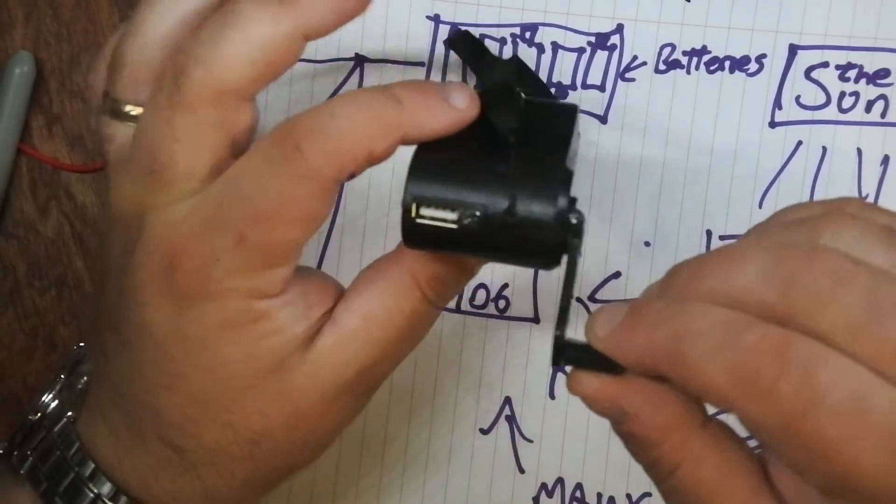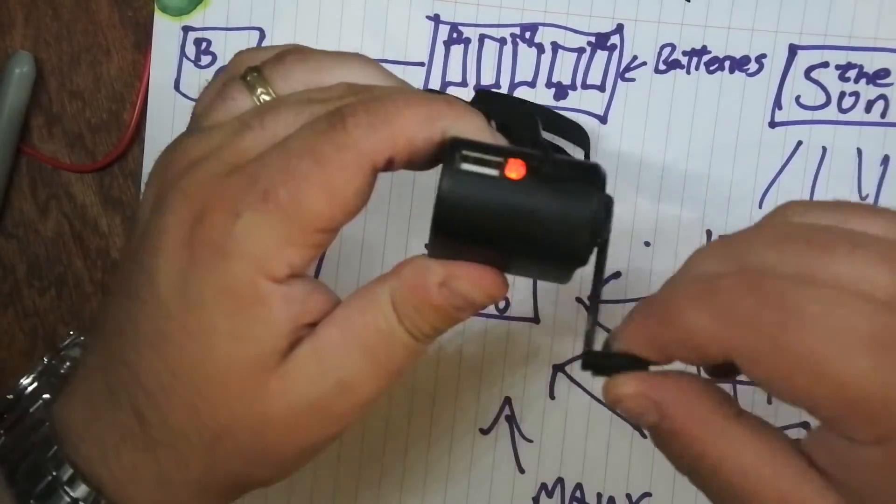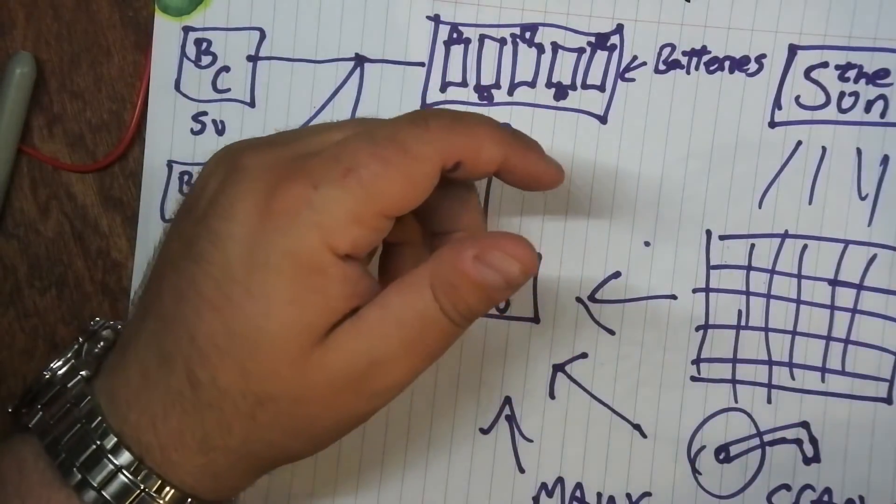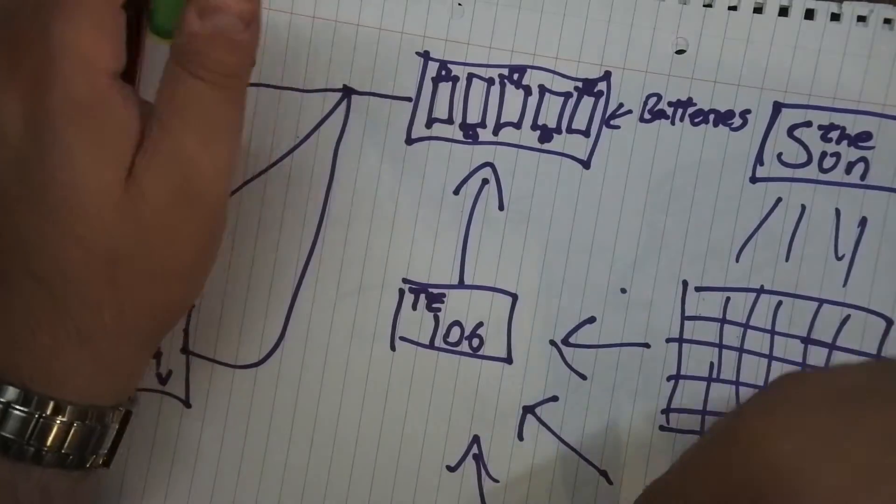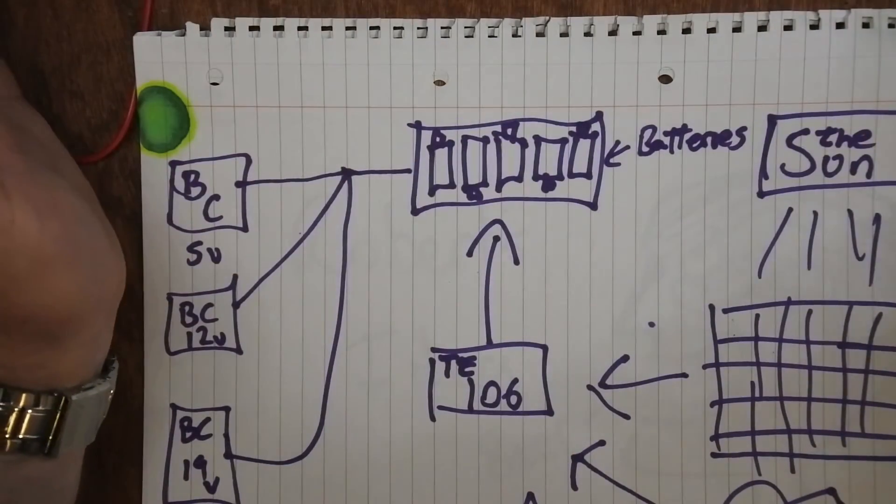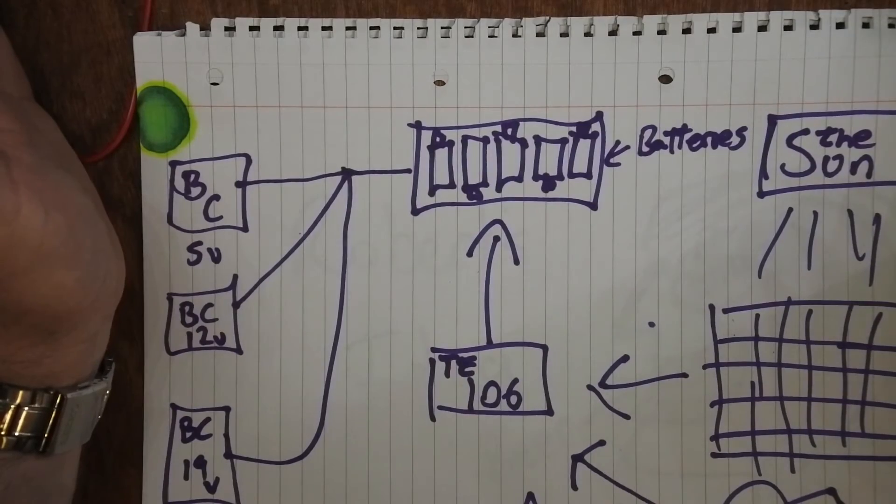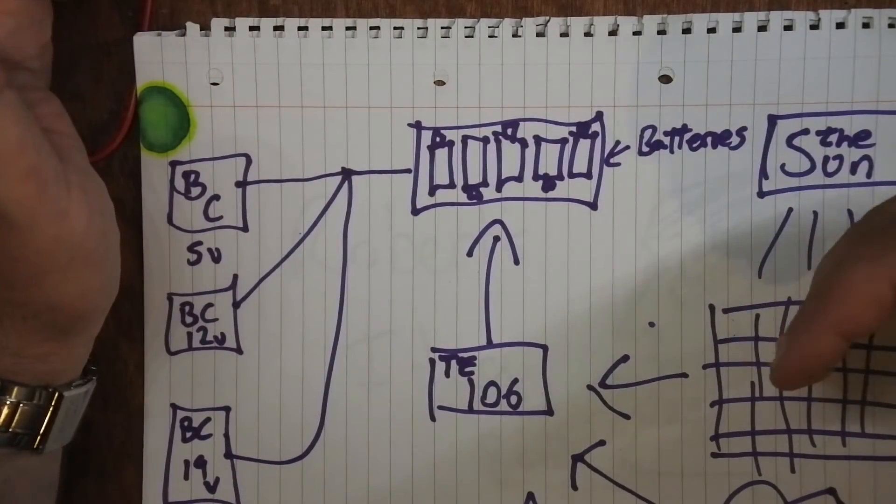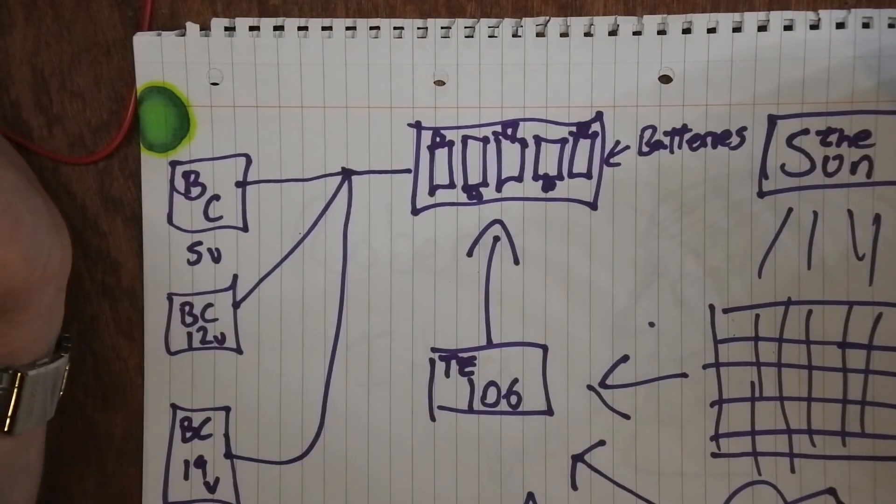And in a future video, I'm going to take this apart. I think this is like a dollar on eBay. And I bought a couple of them and they were all the same. And actually, I want to have a box with all this inside. So I want multiple input power options, multiple power output options.